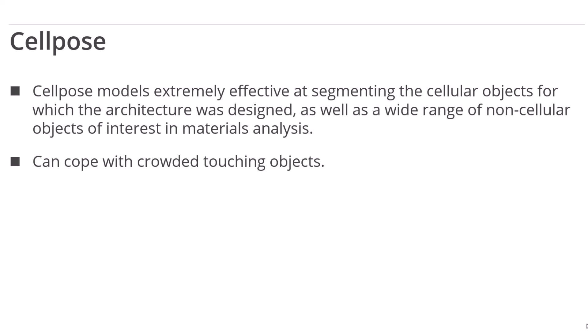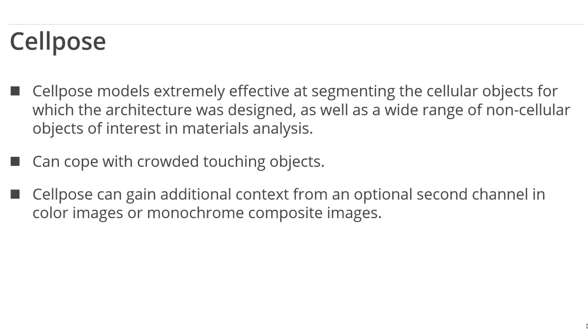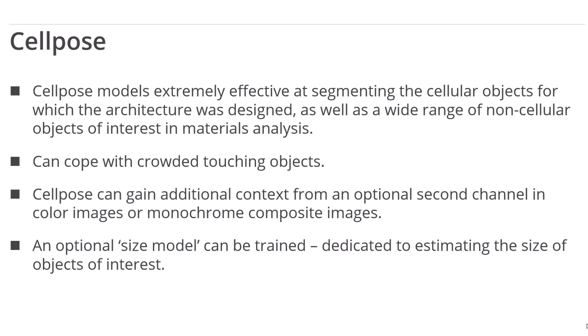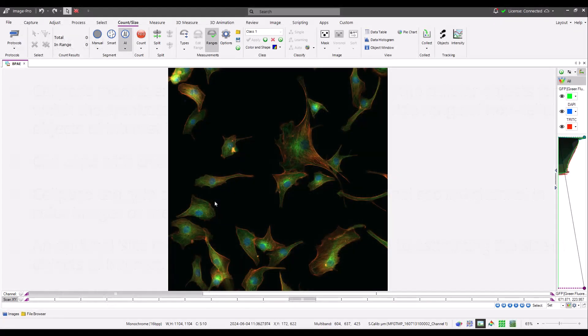CellPose models can cope with crowded and touching objects, and CellPose can gain additional context from an optional second channel in color images or monochrome composite images. An optional size model can be trained, dedicated simply to estimating the size of objects of interest. CellPose finds a single class of objects per model. Let's now return to Image Pro.